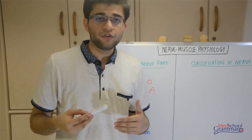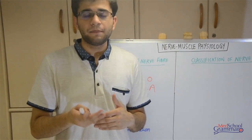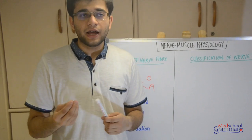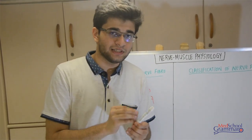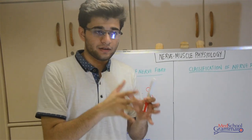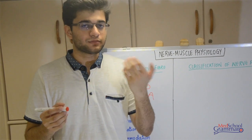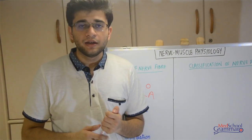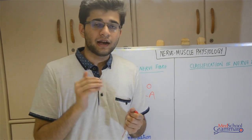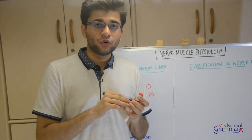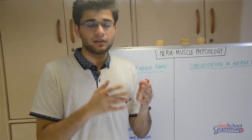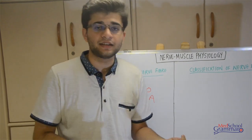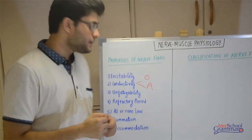The sixth property is summation. If a sub-threshold stimulus is applied, no response is elicited. However, if sub-threshold stimuli are applied continuously in rapid succession, they add up. For instance, if threshold is 40 millivolts and a 10 millivolt stimulus is applied four times in quick succession, the stimuli are summated to act as a 40 millivolt stimulus and elicit a response.